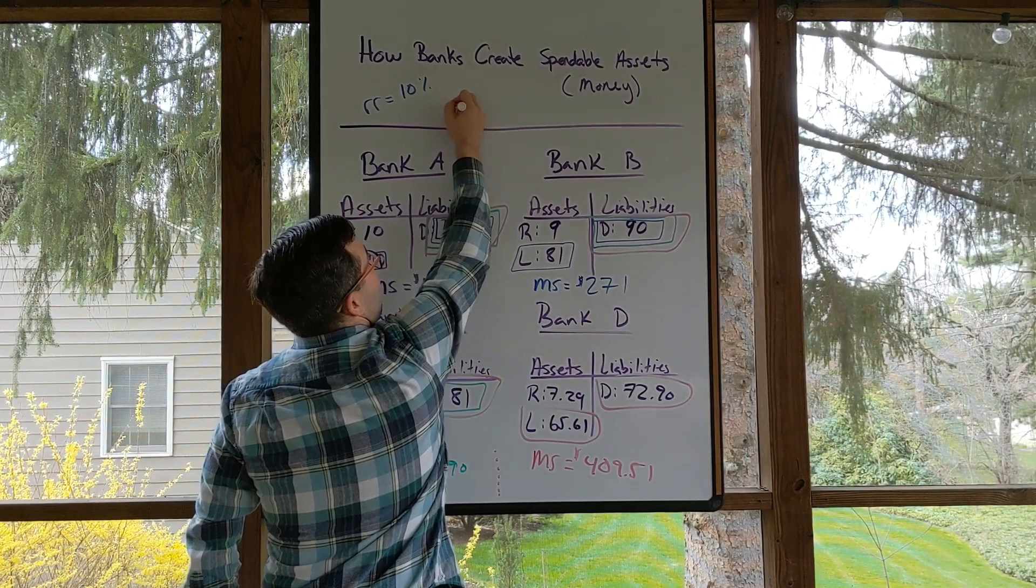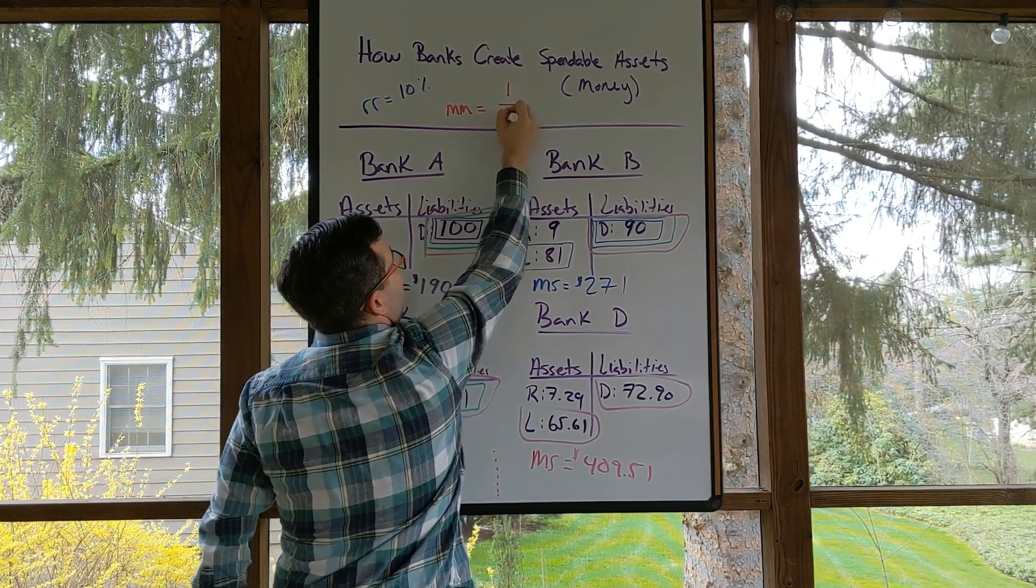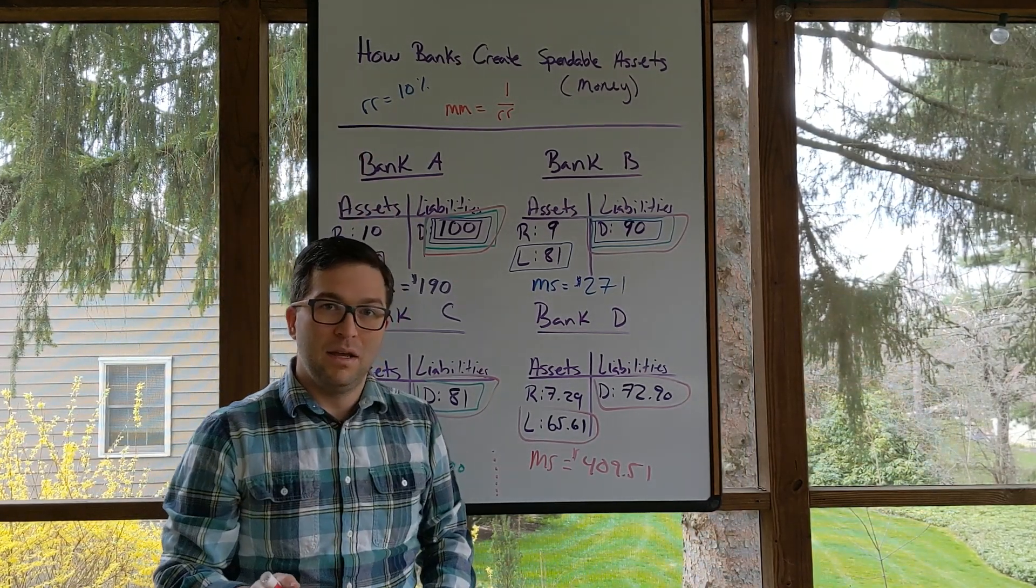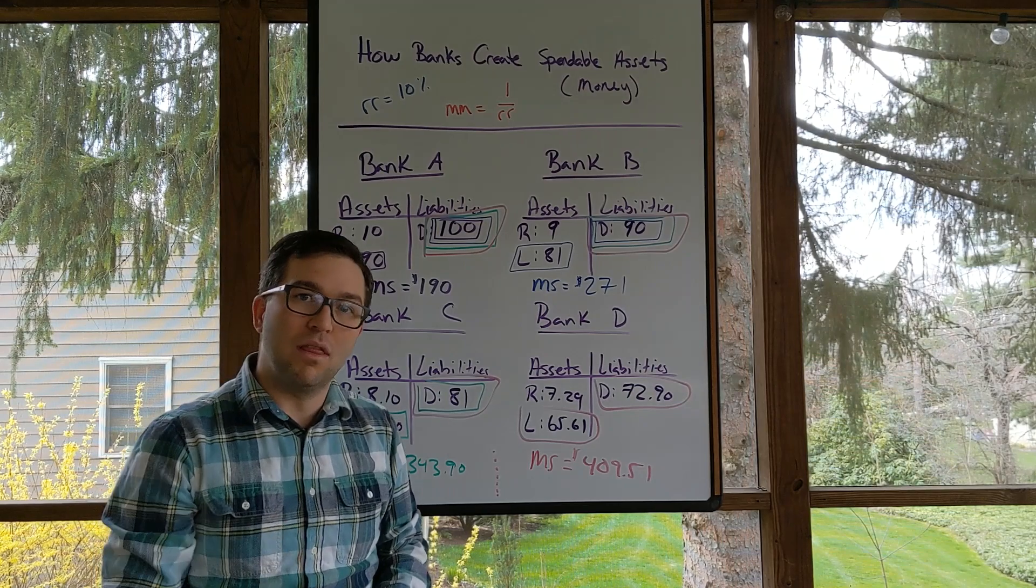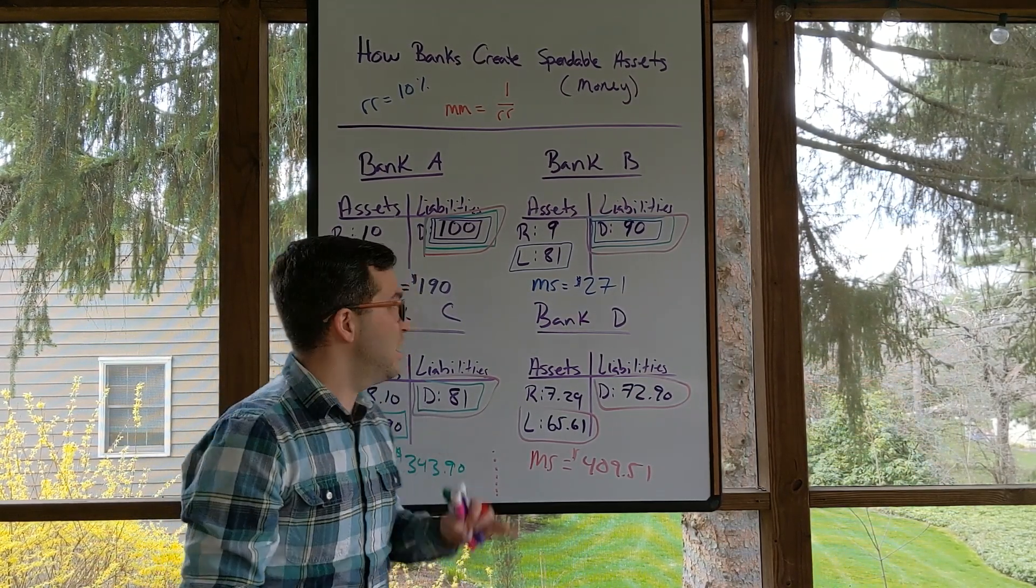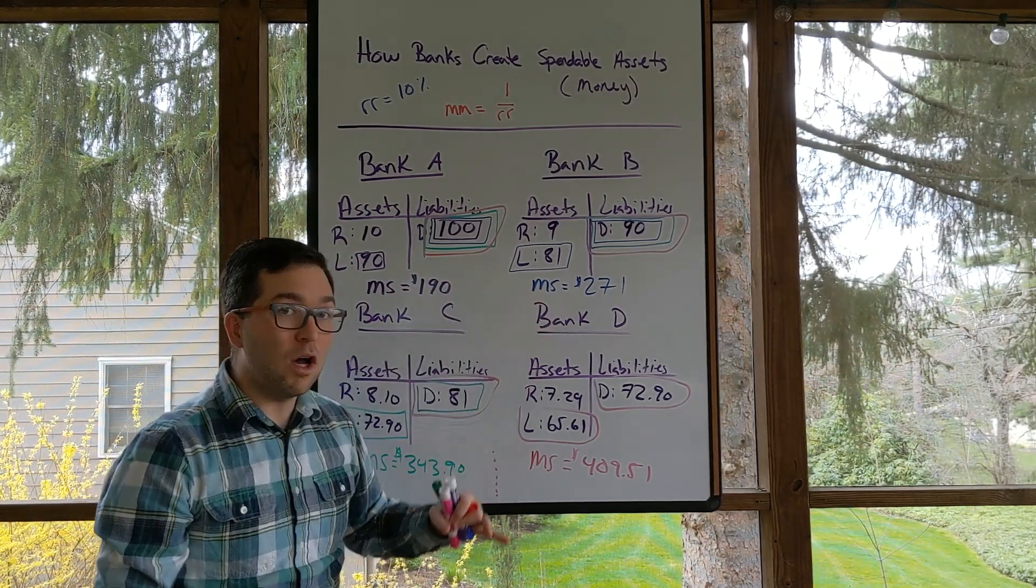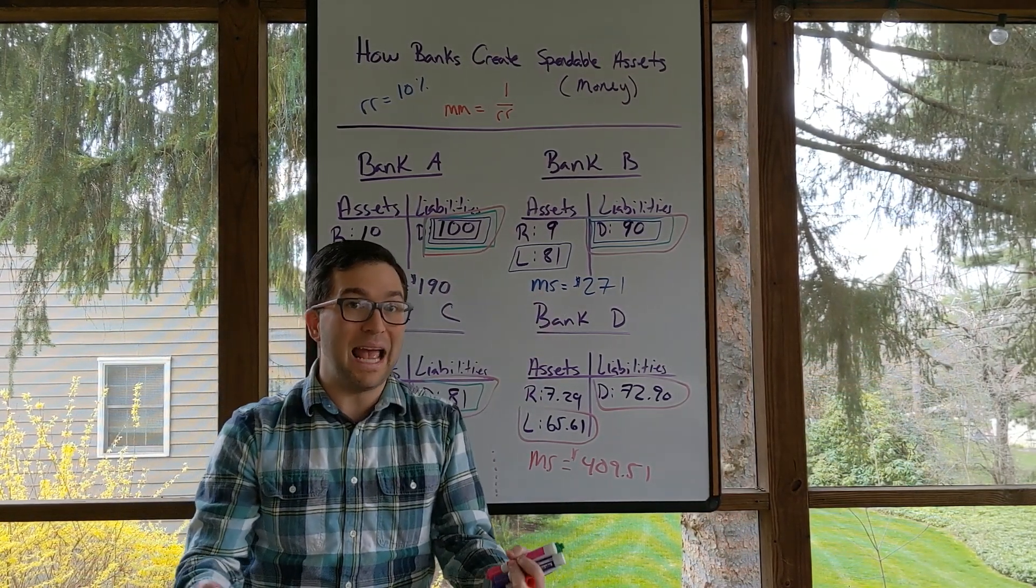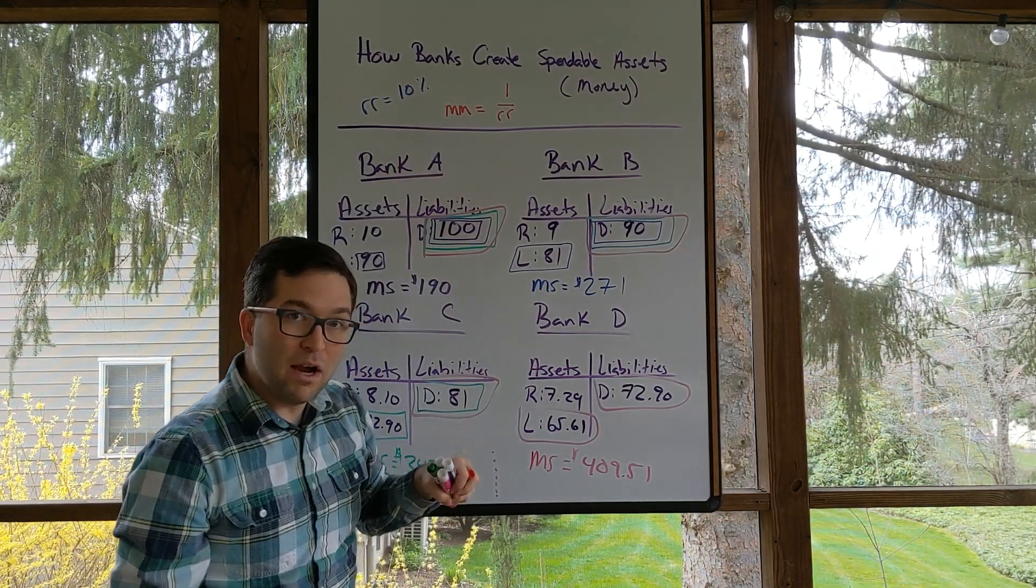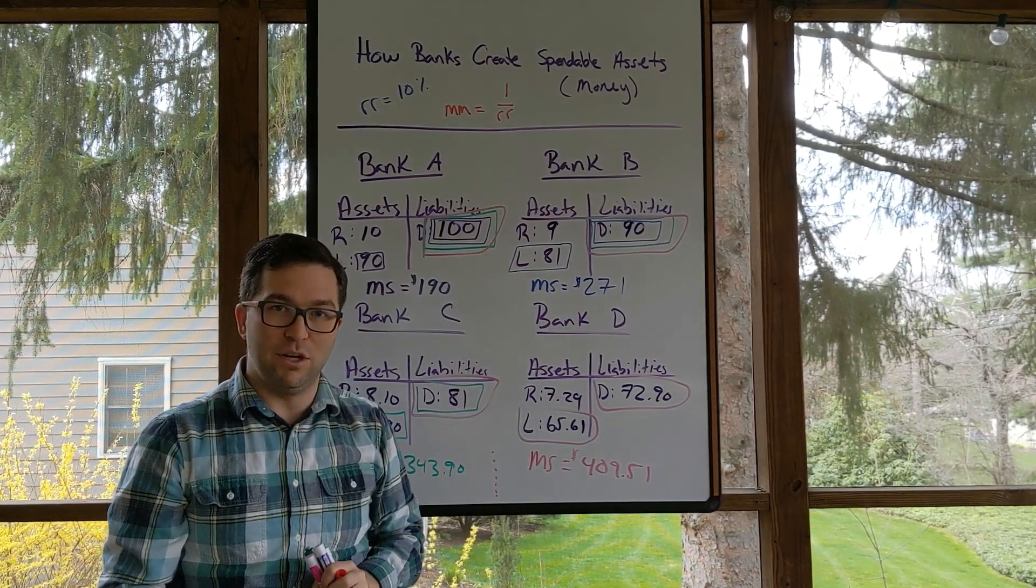So that money multiplier equation is going to be 1 divided by RR. In this case, it's 1 over 10%, which is 10. And you can visit your textbook or search online if you're really interested in the math behind that. But what I need you to understand is the process of what is happening, understanding that your money supply is always deposits and currency. That's my M1 that we've talked about. And that your money multiplier, your simple deposit multiplier, in this class is equal to 1 divided by the required reserve ratio.